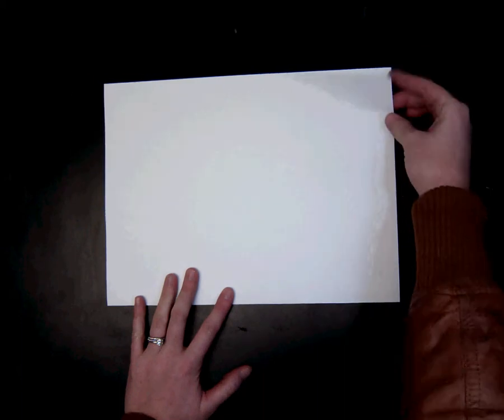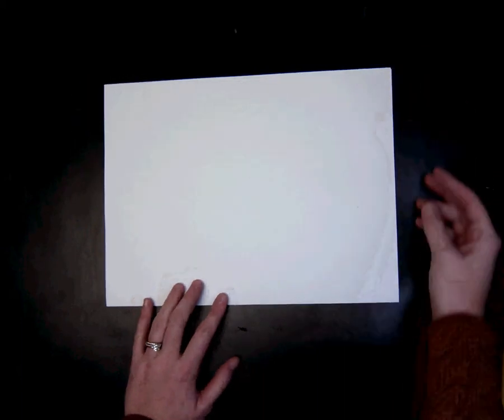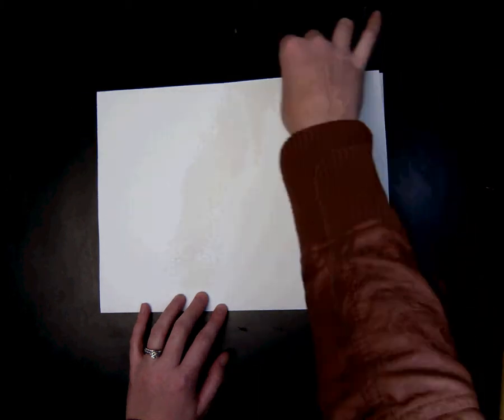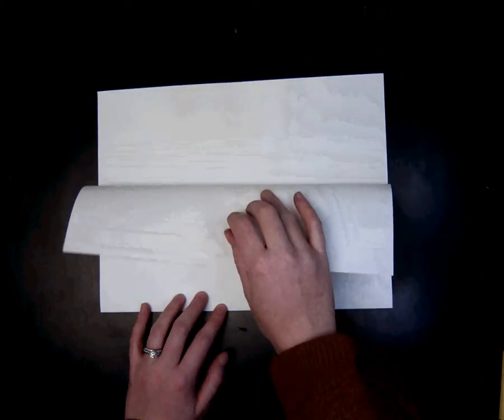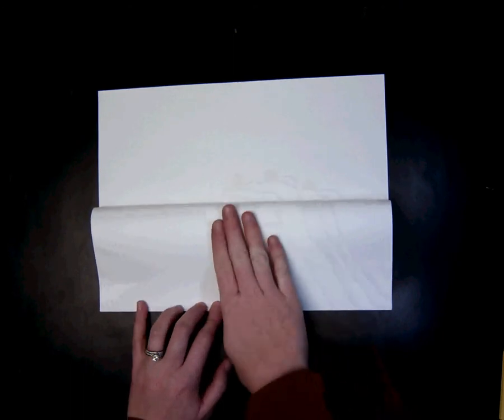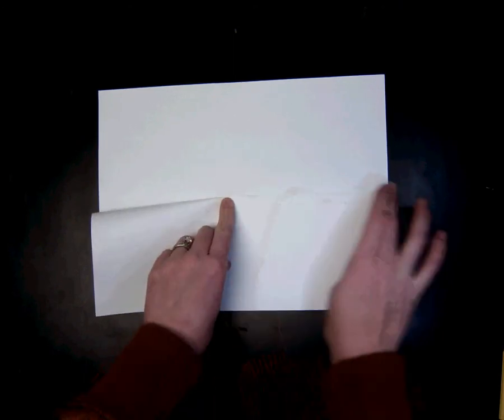The next step is to fold it again. Now right now I have the fold closest to me and I have the opening above. What I'm going to do is I'm going to take one side and I'm going to fold it back like that. And then I will fold it.